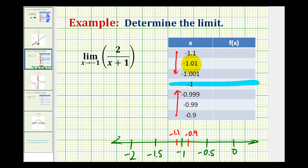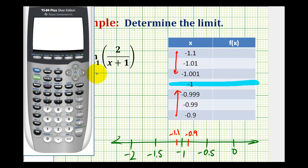And now we'll substitute these x values into the function, and then analyze the table to determine what this limit would be. And we're going to go ahead and evaluate these on the graphing calculator. So the first thing we'll do is type in our function. So we press y equals, and we have 2 divided by the quantity x plus 1.